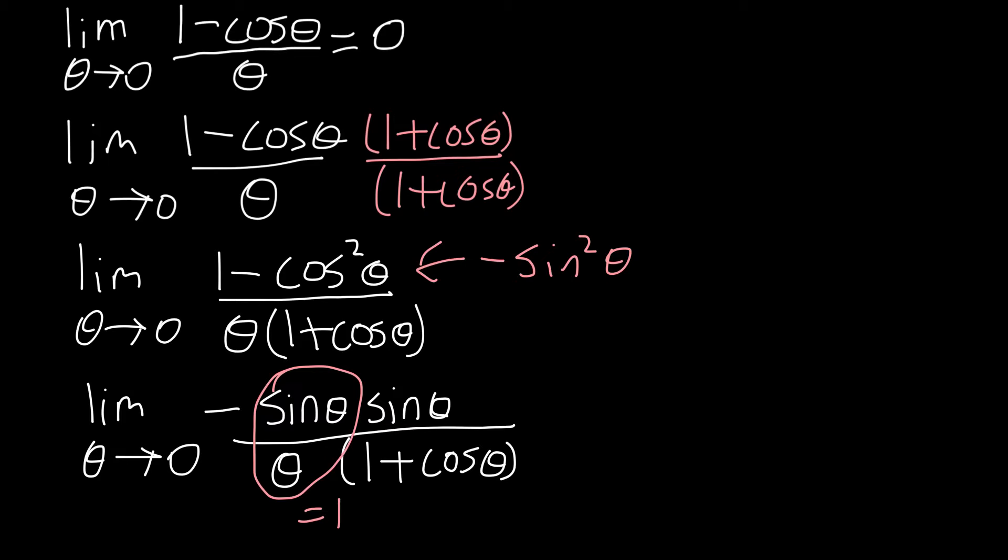And so now, when we evaluate our limit, we get minus 1 times 0, because as theta goes to 0, sine theta goes to 0, over 1 plus 1, which is equal to minus 1 times 0. Now, this is not an indeterminate form. This is, in fact, equal to 0.